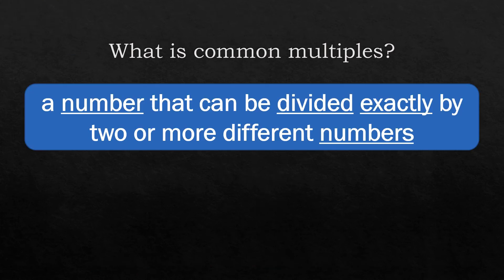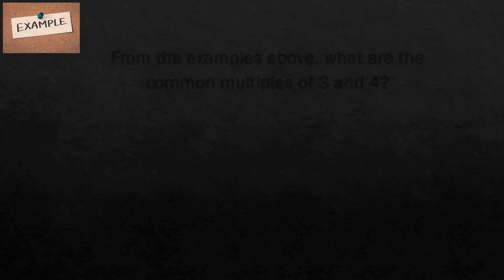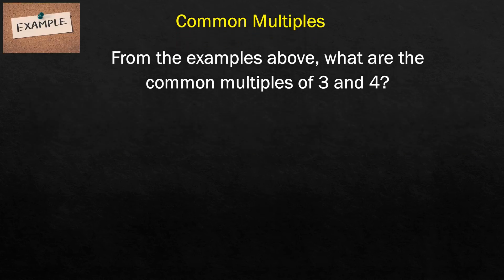After learning the multiples, we are now ready to learn the common multiples. Common multiple is a number that can be divided exactly by two or more different numbers. Example. What are the common multiples of 3 and 4?